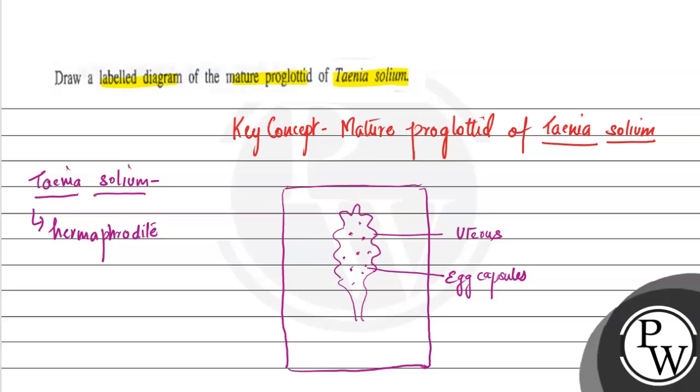Then there is the oviduct. This is the ovary, then this is the ovarian bridge, and this is the oviduct.